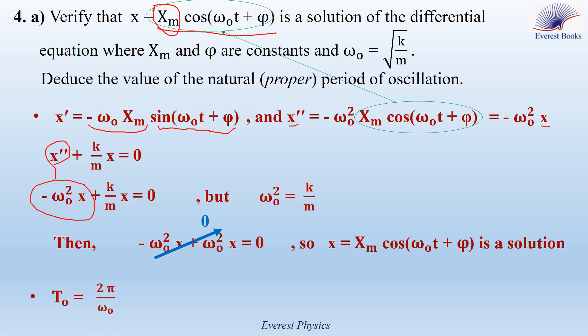The natural period is given by T₀ equals 2π/ω₀, but ω₀ equals the square root of k/m, so T₀ equals 2π times the square root of m/k. Substituting m equals 0.5 kg and k equals 10 newtons per meter, the final result is T₀ equals 1.4 seconds.